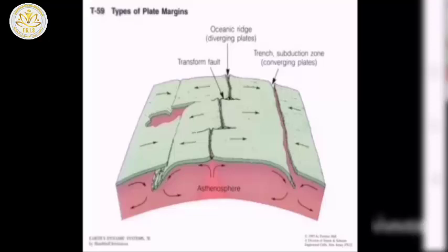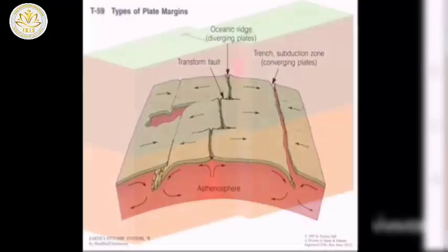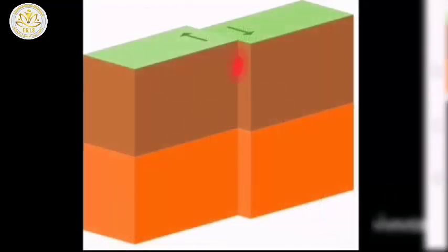Types of plate motion. Transform boundary: plates slide past each other. While sliding, they make vibrations, which represent an earthquake.